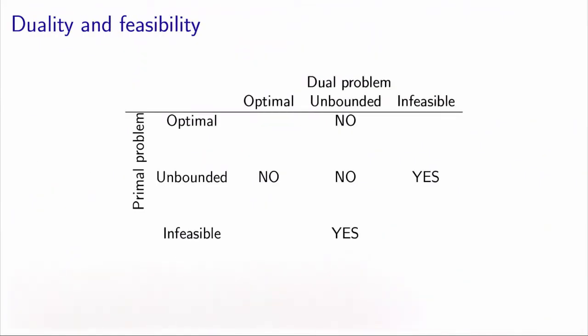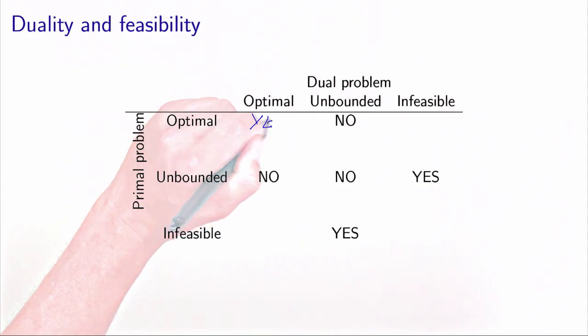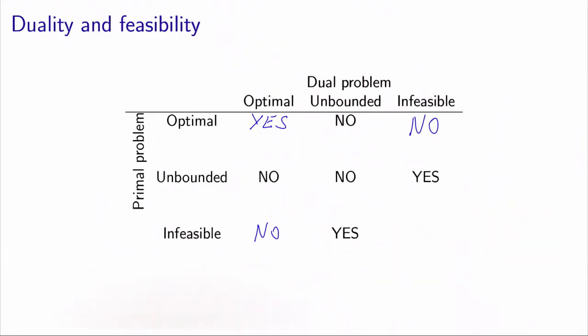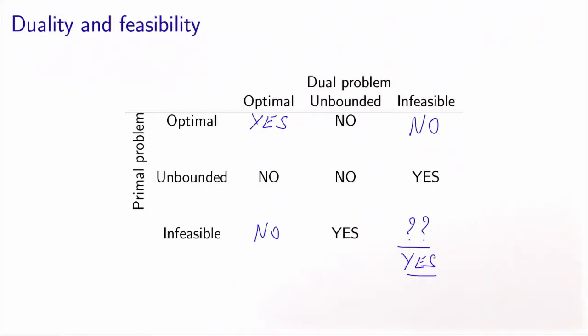We can now complete the table. We have shown that if there is an optimal solution for one problem, there is an optimal solution for the other as well. The remaining entry — whether both the primal and dual can be simultaneously infeasible — cannot be determined from the duality theorem alone, but the answer is yes, and examples can be found in the exercises. In summary, the primal and dual problems are strongly related: the dual value is a lower bound on the primal value, and solving the dual means finding the best lower bound on the primal.